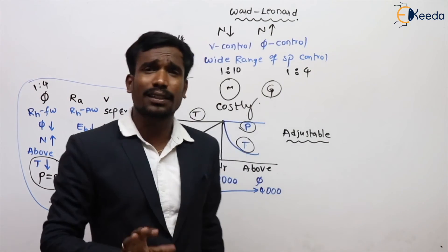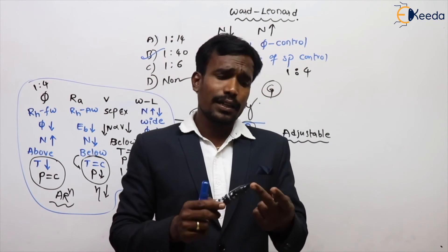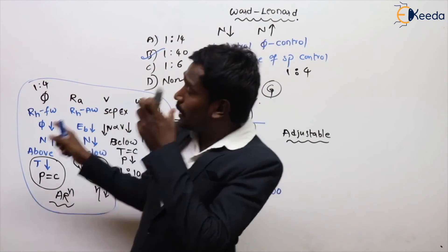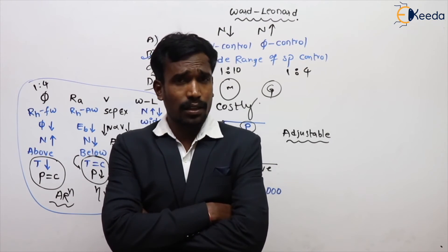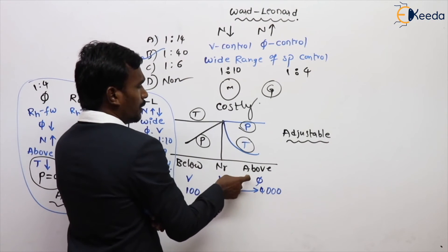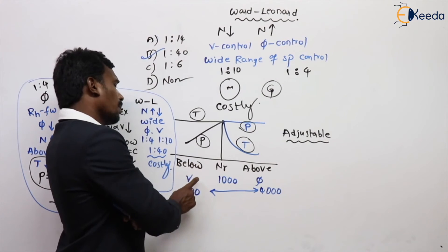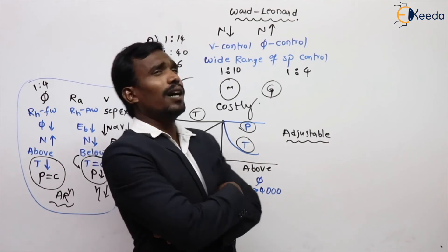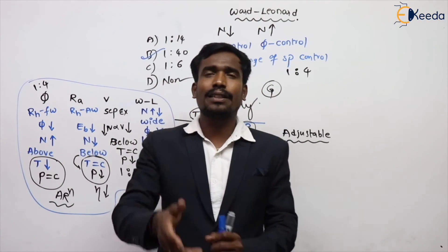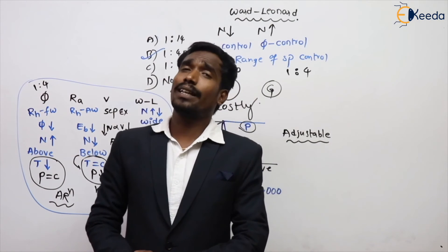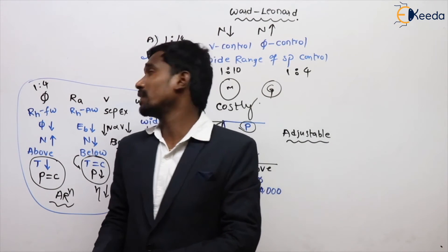These are the speed control methods of the DC motor. They may ask: which method is preferable for above rated speed control? Flux control method is used for above rated speed control. In which case is constant power variable torque drive applicable? Above rated speed. Constant torque variable power drive is for below rated speed. What is the advantage of Ward-Leonard? It is a wide range of speed control method. What is the disadvantage of flux control? We can increase but not decrease the speed, and if flux reduces to increase speed, armature reaction becomes more effective.